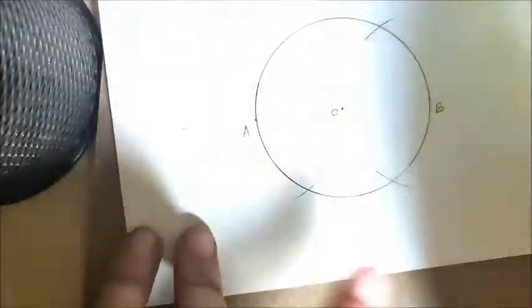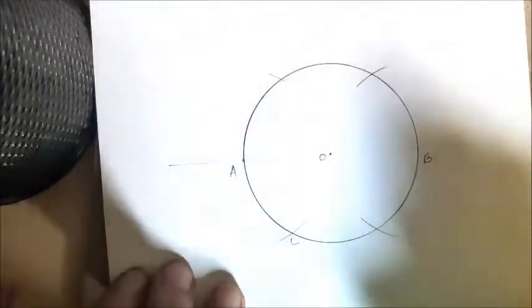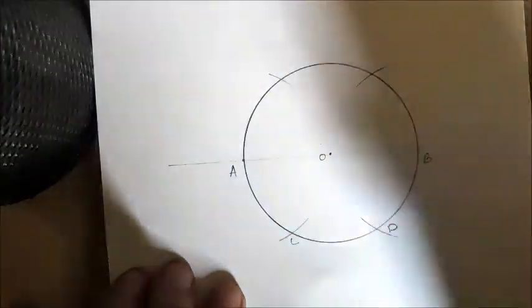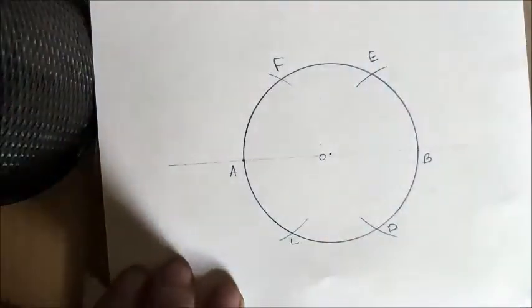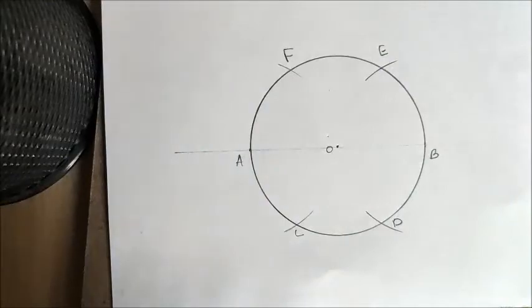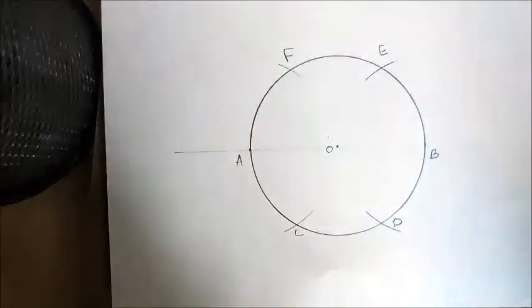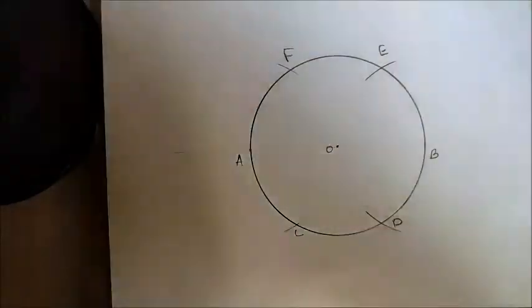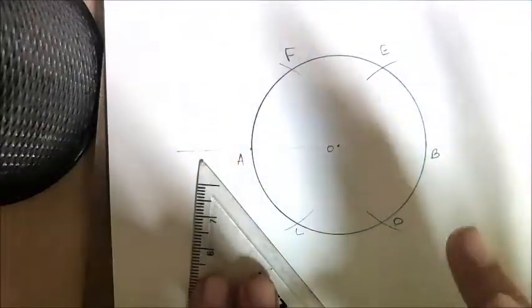So now we get total six points on our circle: A, B, let's name this C, D, E, and F. To divide the circle into three equal parts, we have to join these points with the center O, but remember we don't have to join every point.